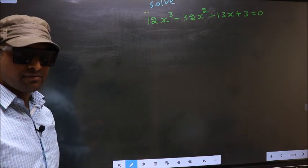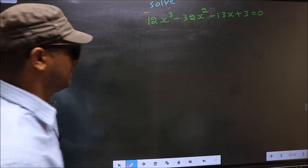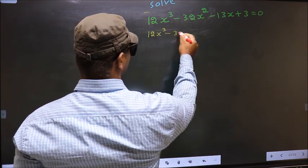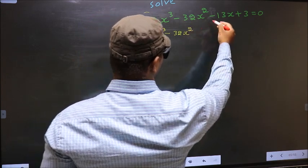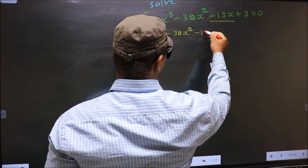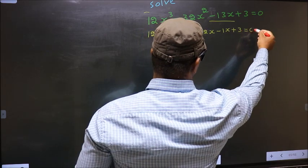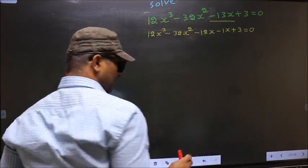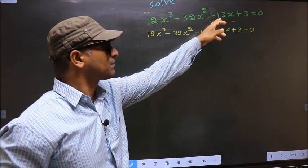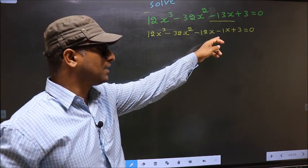For that, we have to change the x term. In 12x cubed minus 32x squared, in place of minus 13x, now I write minus 12x minus 1x plus 3 equals 0. In place of minus 13x, I have written minus 12x minus 1x.